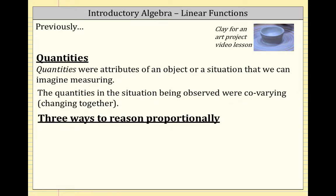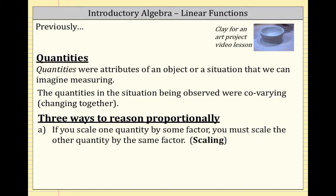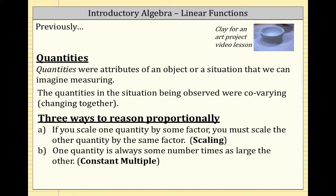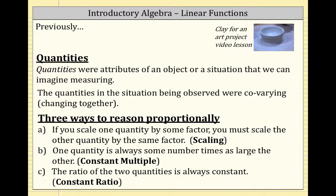We had also discussed three ways to reason proportionally. One way is the scaling way, which is when you scale one quantity by some factor, you must scale the other quantity by the same factor. The other way was a constant multiple — one quantity is always some number times as large as the other. And the third perspective is that the ratio of two quantities is always constant, called the constant ratio perspective.